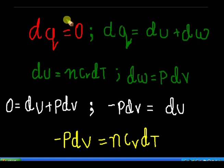Hello guys, today I am going to show you the proof of PV raised to gamma equal to a constant in an adiabatic process.